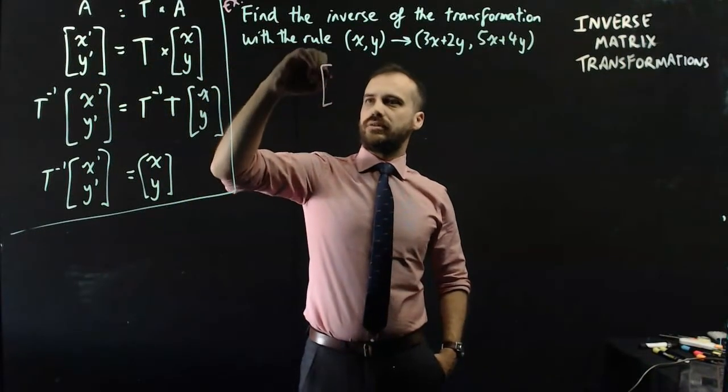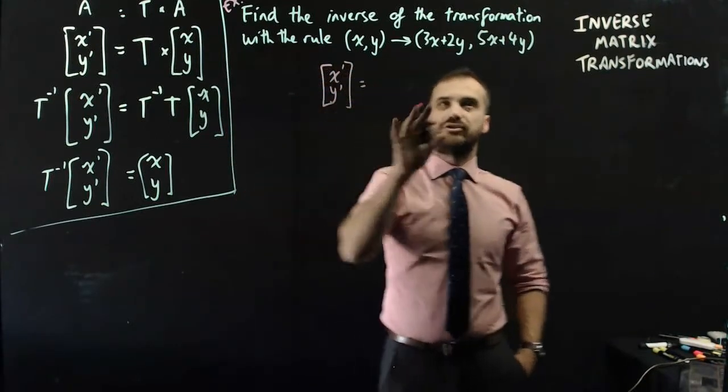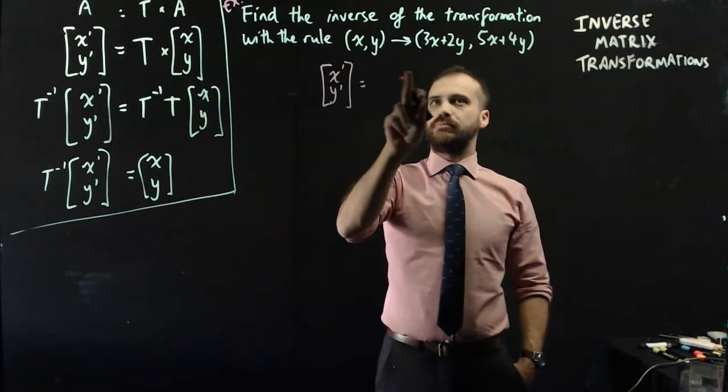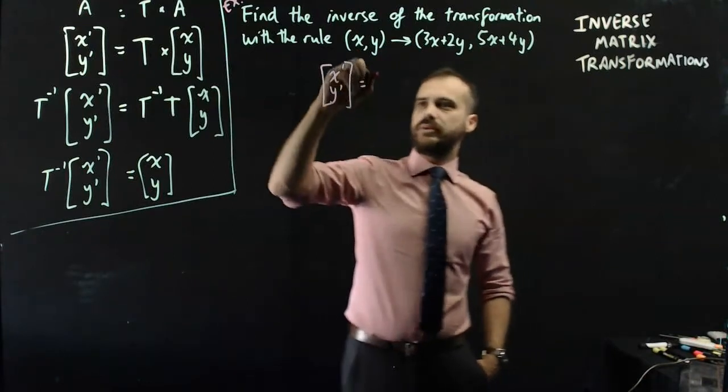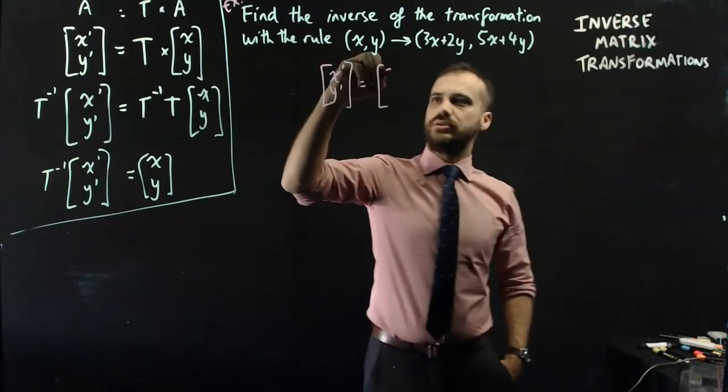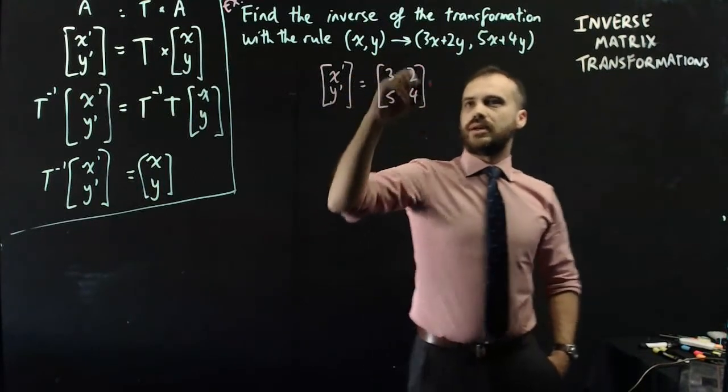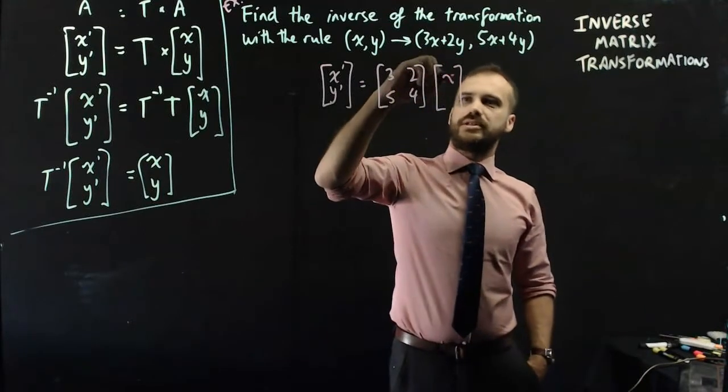So xy dash, so that's our image, is equal to a transformation matrix. Now, the transformation matrix that will map xy onto 3x plus 2y, 5x plus 4y, is 3, 2, 5, 4. And the object that it's mapping is x and y.